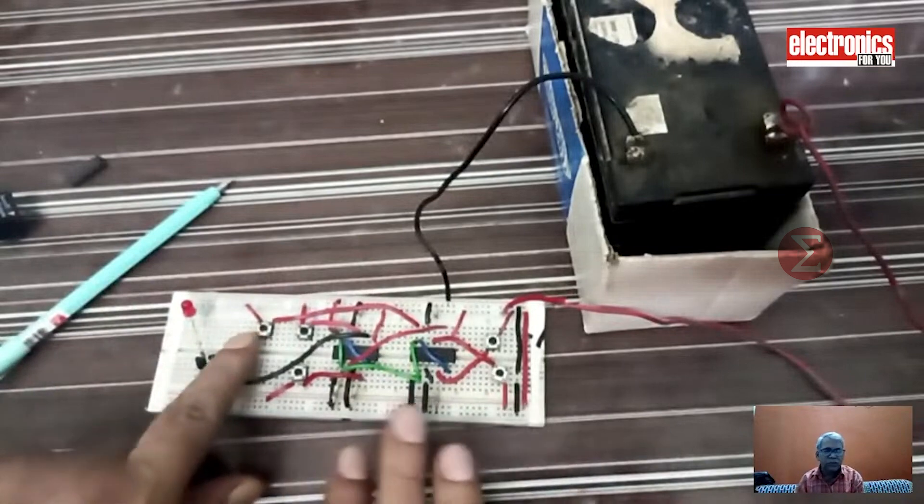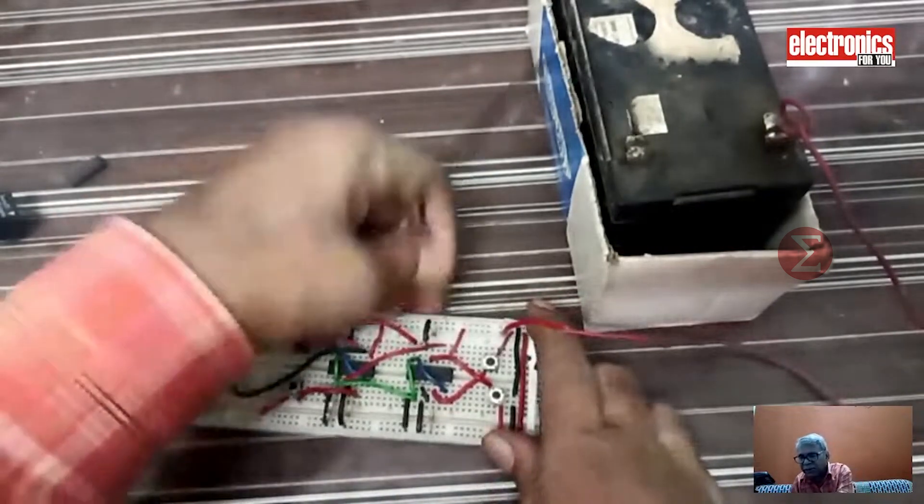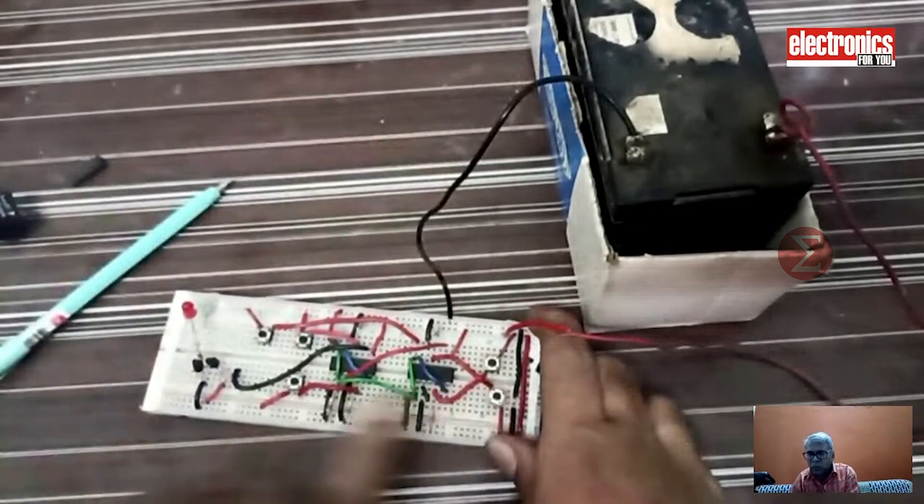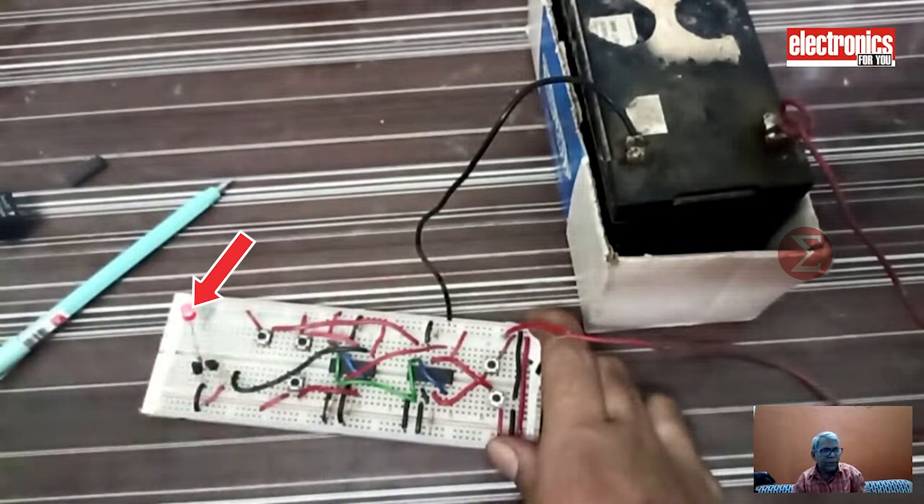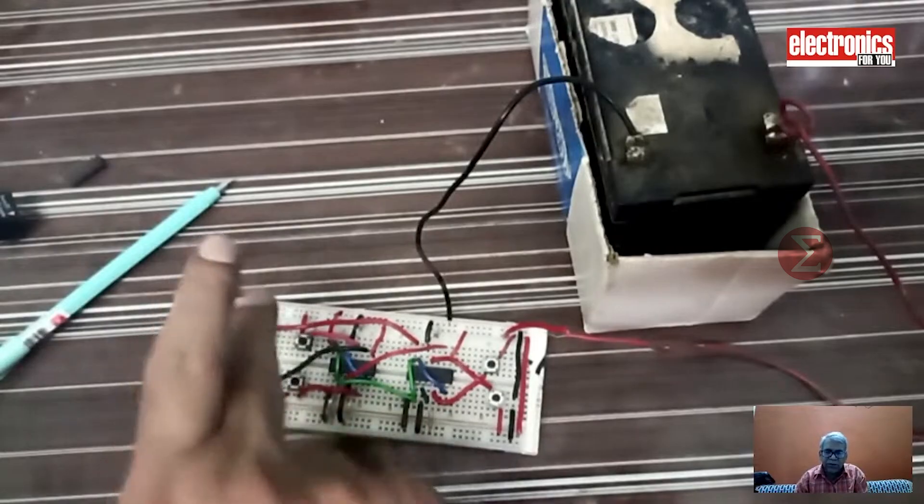Intruders cannot even enter with the hit and trial method. After reset, once you turn off and on the power, circuit will start working properly. Here, you can see after connecting the power again, if you press 8, 2, 6, 5, the LED is on. If you press any other sequence like 8, 2, 6, 1, 5, it is not opening.